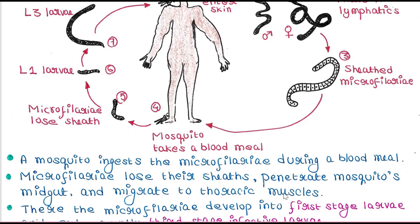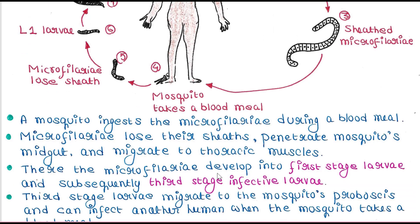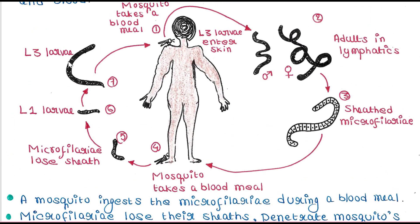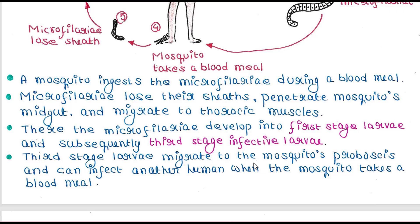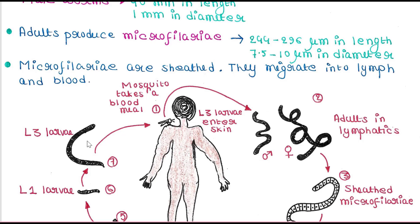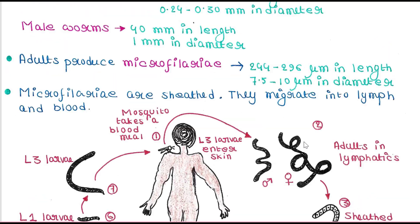In the thoracic muscle of the mosquito, the microfilariae develop into first-stage larvae and subsequently third-stage larvae, which is the infective stage. The third-stage larvae migrate to the mosquito's proboscis and can infect another human when the mosquito takes a blood meal. The larva gets inserted into the human body and the cycle is repeated again and again.